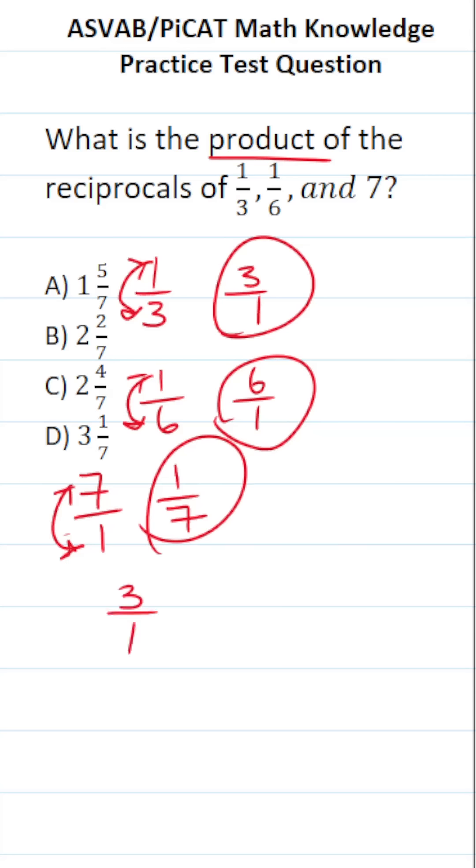So it's going to be 3/1 times 6/1 times 1/7. When you multiply fractions, you just multiply straight across. So this becomes 3 times 6, which is 18 times 1, which is 18. And 1 times 1 times 7 is 7, giving us 18/7.